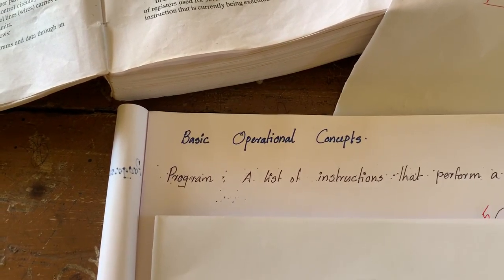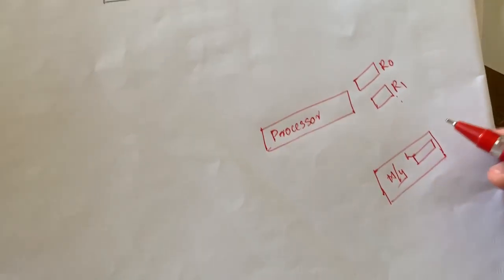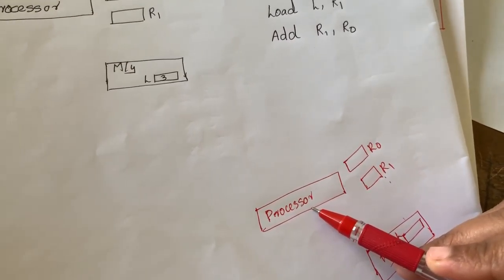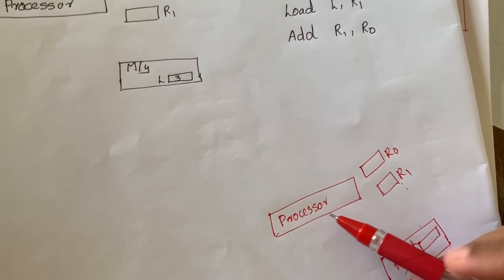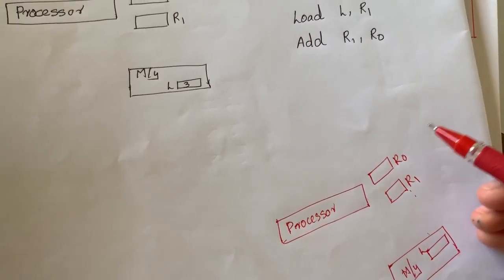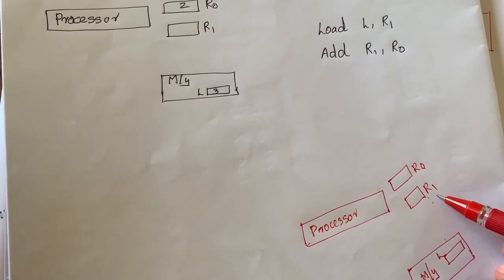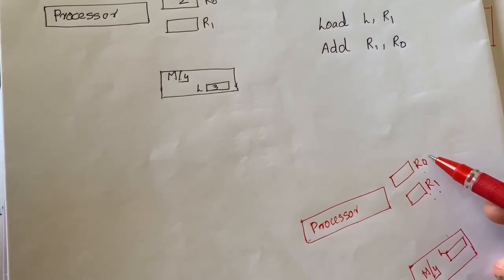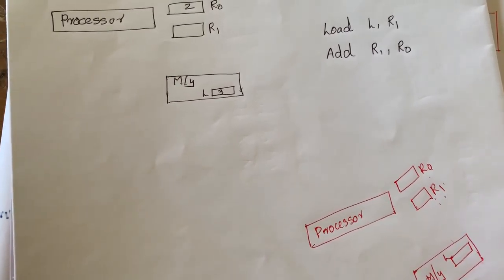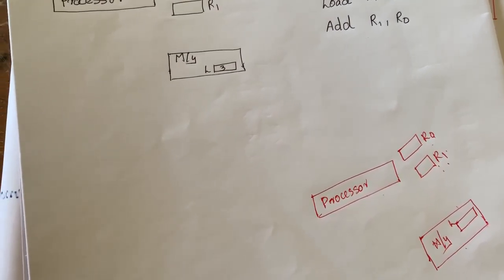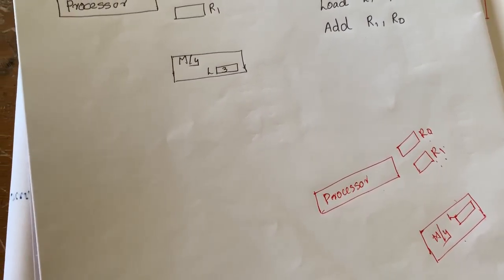For more clarification, let's consider some diagrams. This is the processor unit of our system. The processor is always associated with a set of register units. Registers are actually storage units — they can store a little bit of information and are always associated with the processor unit of our system.